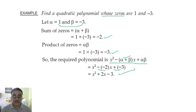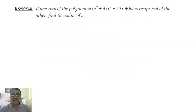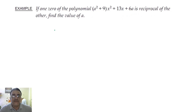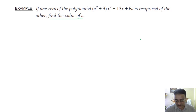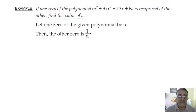Now in the additional questions section, I am going to take two examples. The first one: if one zero of the polynomial a²+ 9x² + 13x + 6a is the reciprocal of the other, find the value of a. If one zero is α, then the other zero is 1/α.